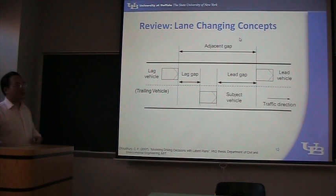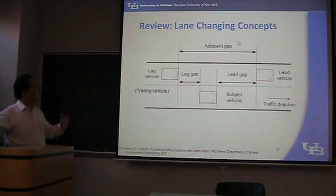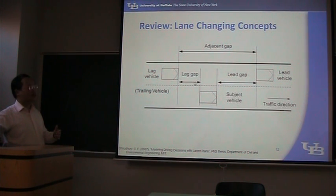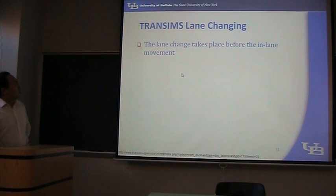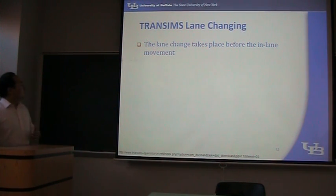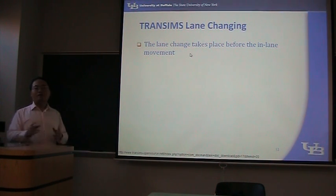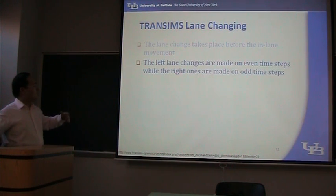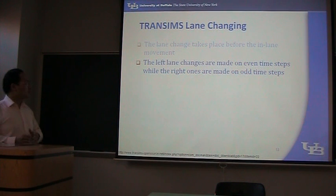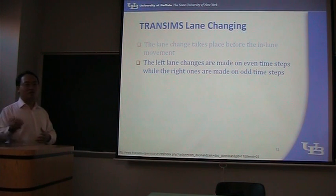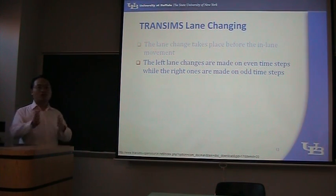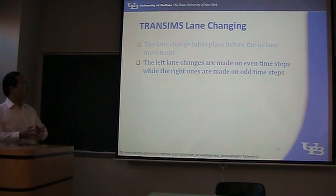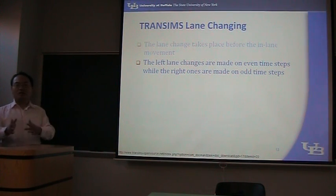Now let's review lane changing concepts before discussing lane changes in Transims. We have the subject vehicle, the lead vehicle, the lag vehicle, the lead gap, the lag gap, and the adjacent gap — three gaps total. The lane change takes place before the in-lane movement, before the car following step. Left lane changes are made on even time steps — 2, 4, 6 — and on other time steps vehicles change right. So it alternates: change left, change right, for different time steps.